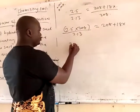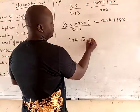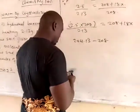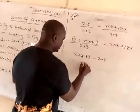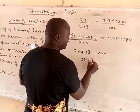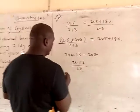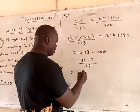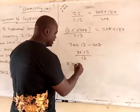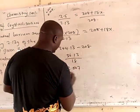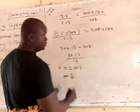Calculating: 2.5 times 208 divided by 2.13 gives 244.13. Subtracting 208: 244.13 minus 208 equals 36.13. Dividing 36.13 by 18 gives approximately 2.007, so x is approximately 2. The number of molecules of water of crystallization is 2.